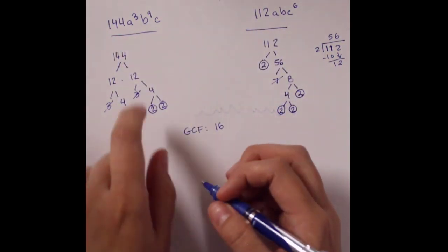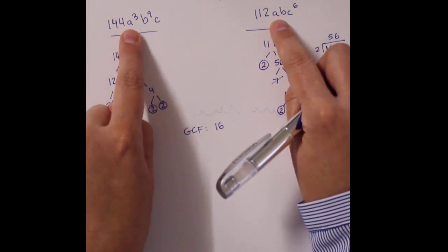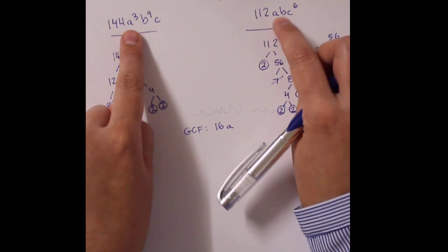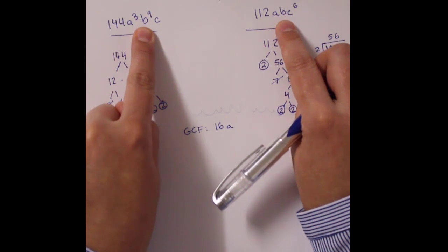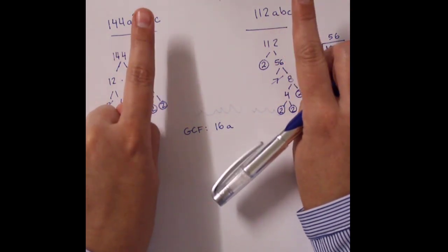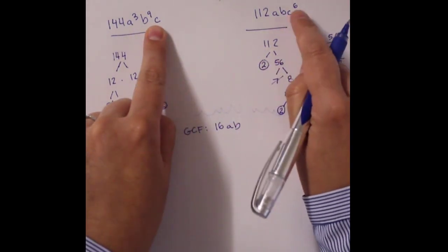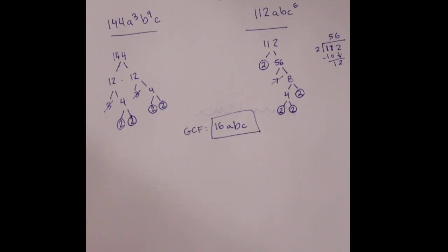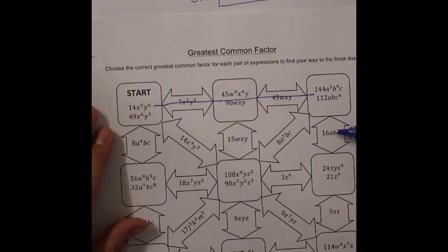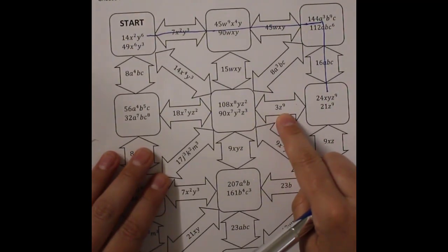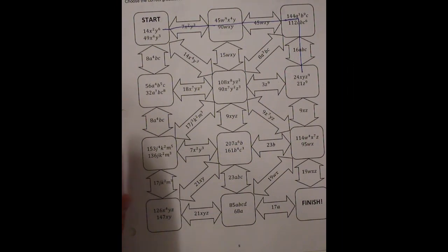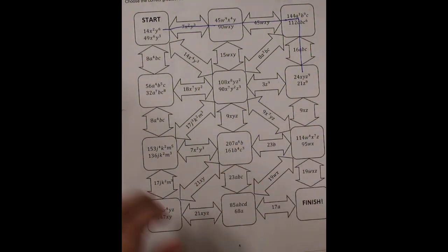For the a's: the first term has three a's and the second has one, so they share one a. For the b's: one expression has nine b's, the other has one, so they share one b. For the c's: one expression has c⁶ but the other only has one c, so they share exactly one c. Our GCF is 16abc. Back in the maze, we work our way down to the next box, where the options are 3z⁹ or 9xz as a common factor.